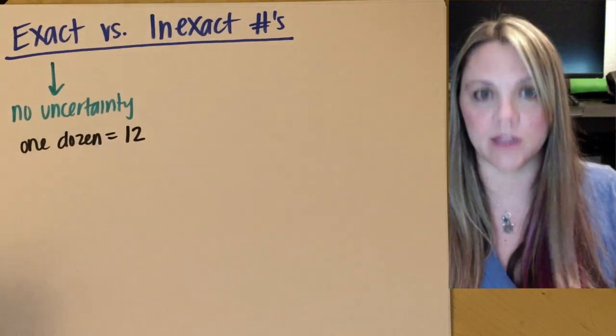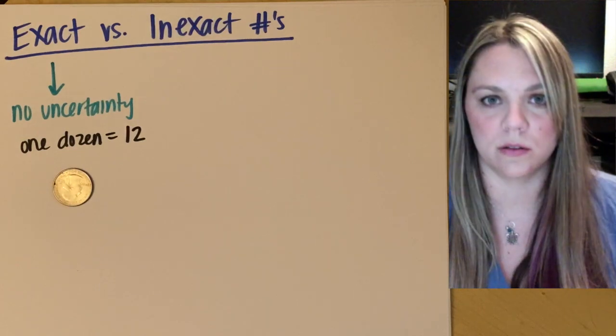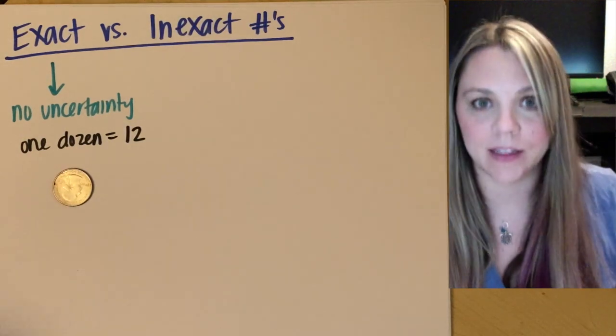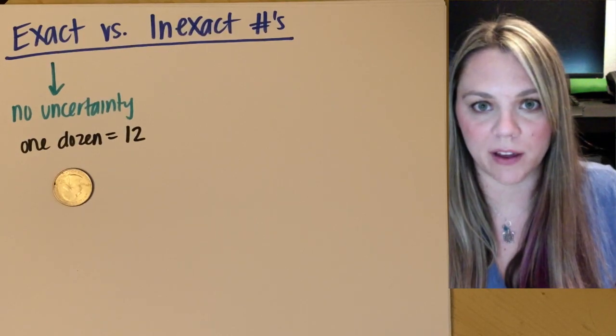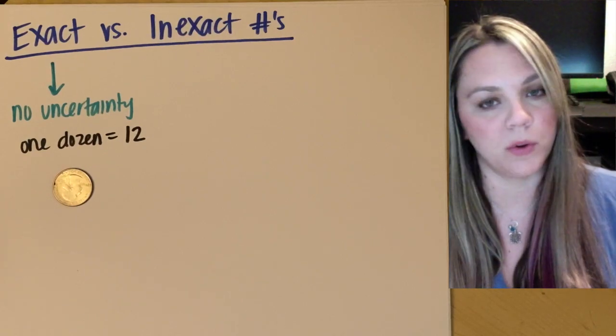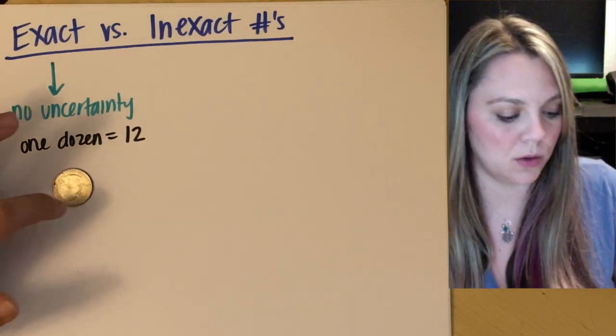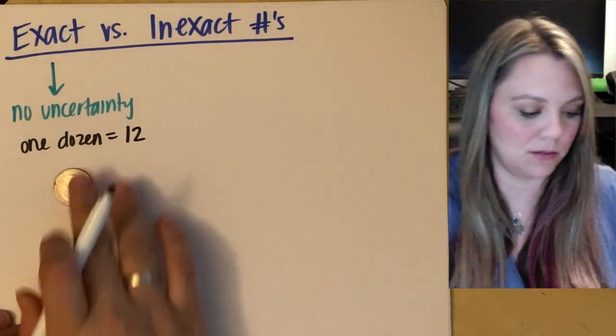We're done, right? That's one dozen. If I had like one quarter, that is worth exactly 25 cents, right? It's not worth 25.1 cents. It's not worth 24.9999 cents. One quarter is worth exactly 25 cents, right?